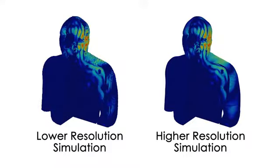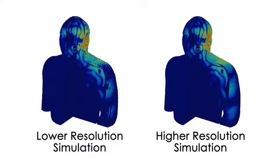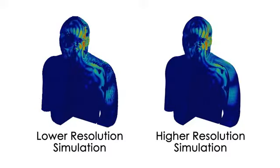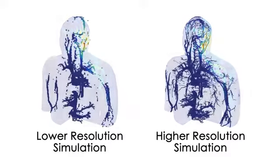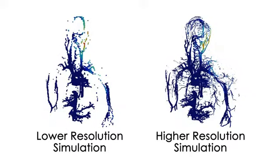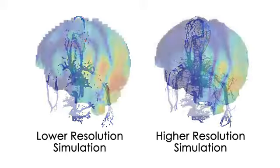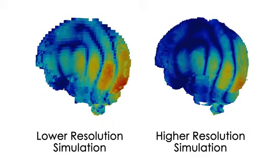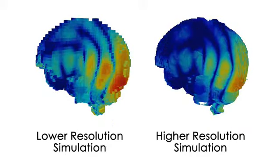As a result of these simulations, the researchers determined that low-resolution models can under or overestimate the power absorbed by the skin, cornea, cerebrospinal fluid, and brain by as much as 50%.